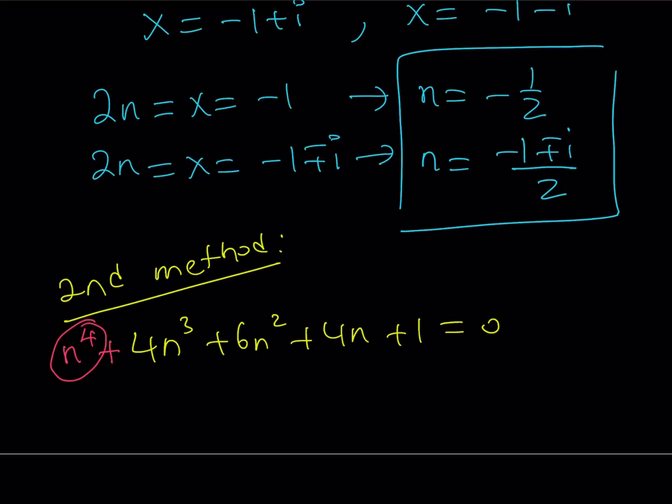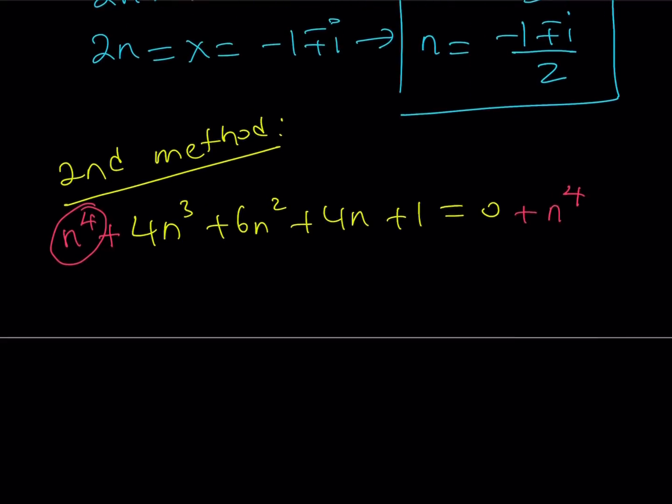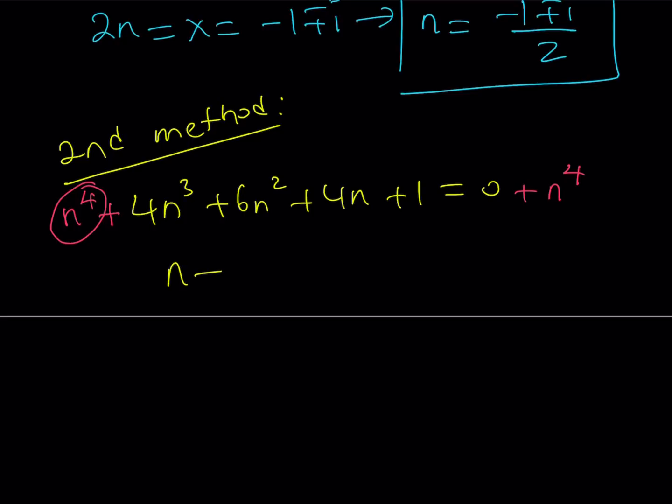Wouldn't it be nice if we had n⁴ added to this? This is missing a term. If we had n⁴ here, then we would have something special. You can't just add it out of the blue, so you have to add it on both sides. And if you do, you're going to get something nice.